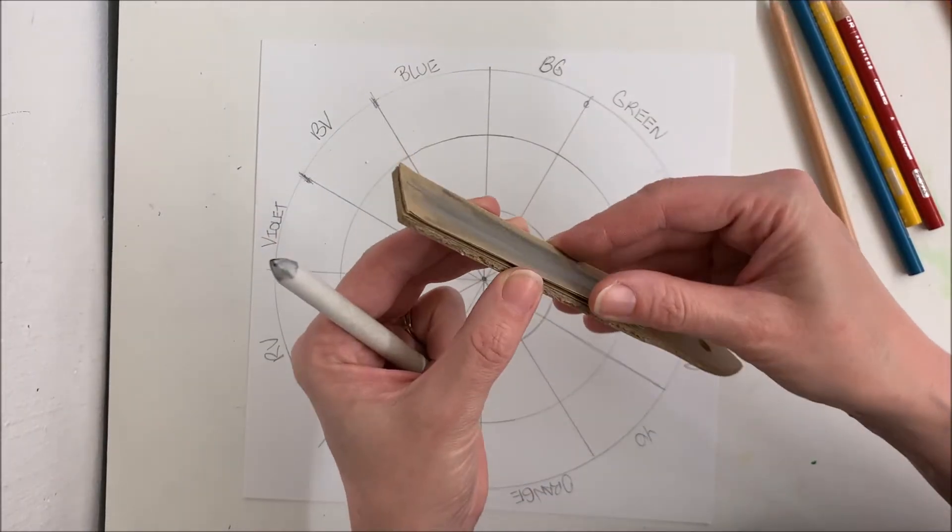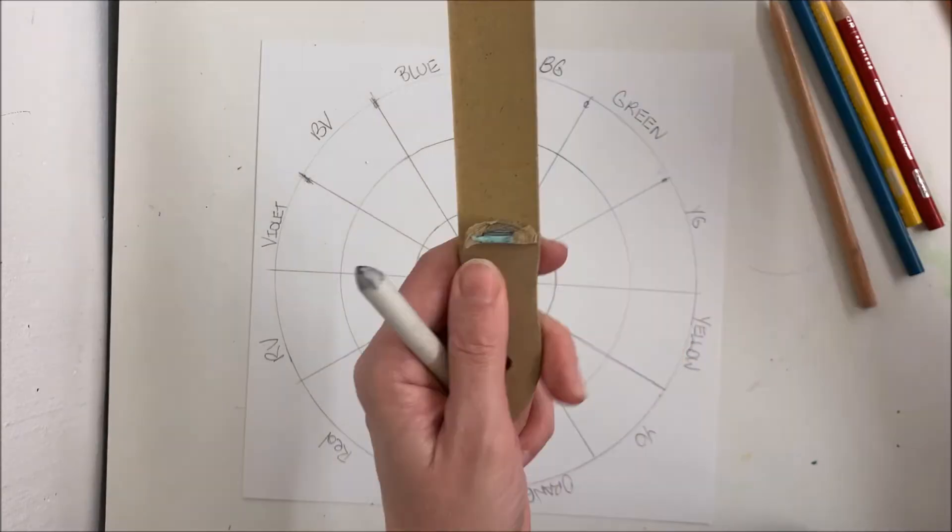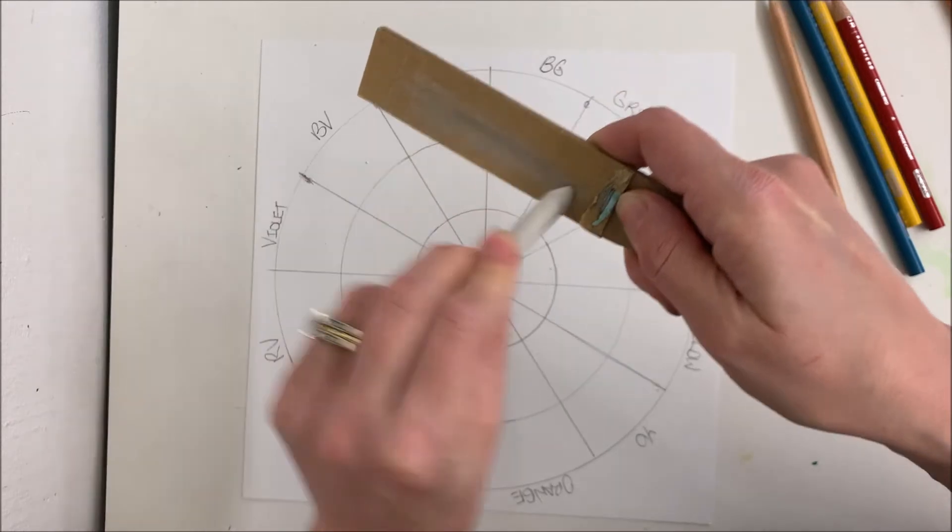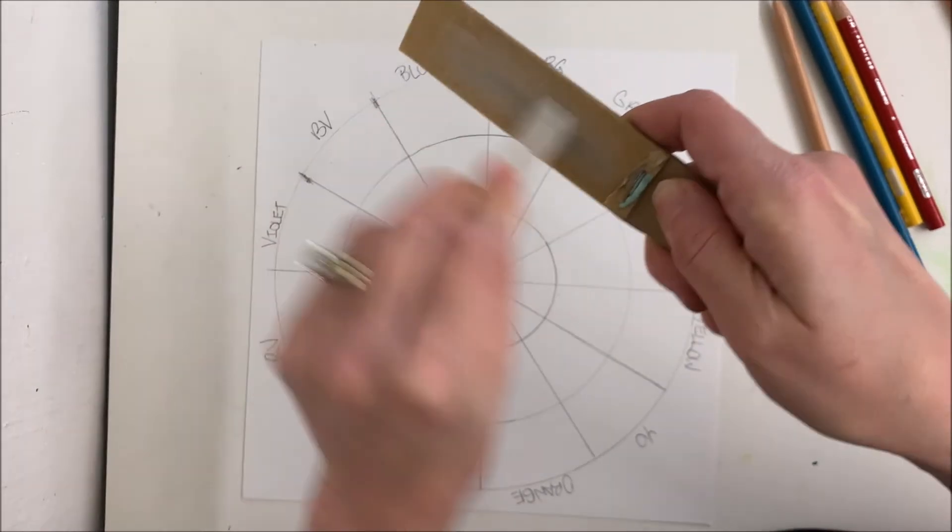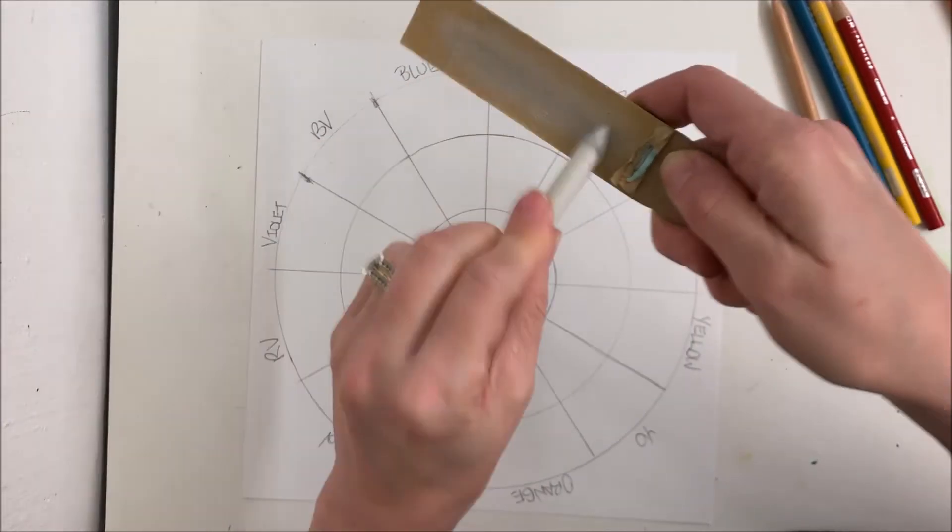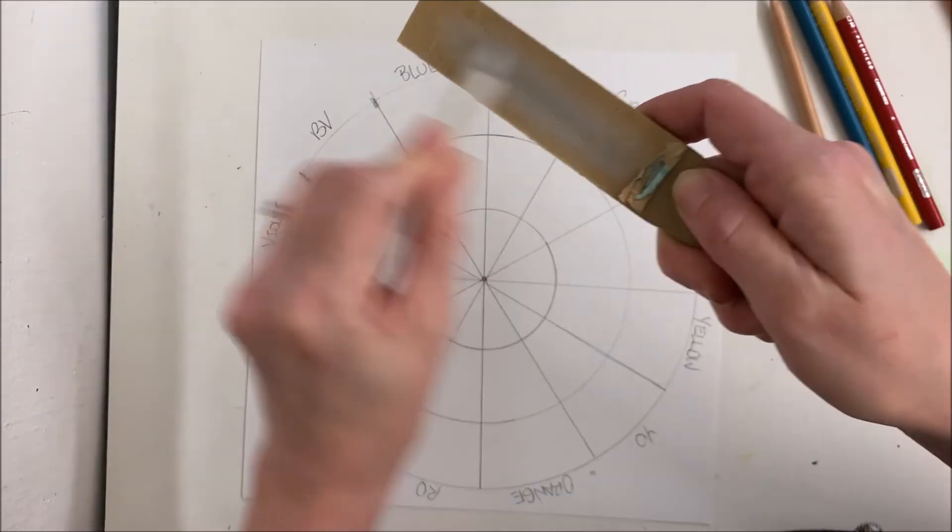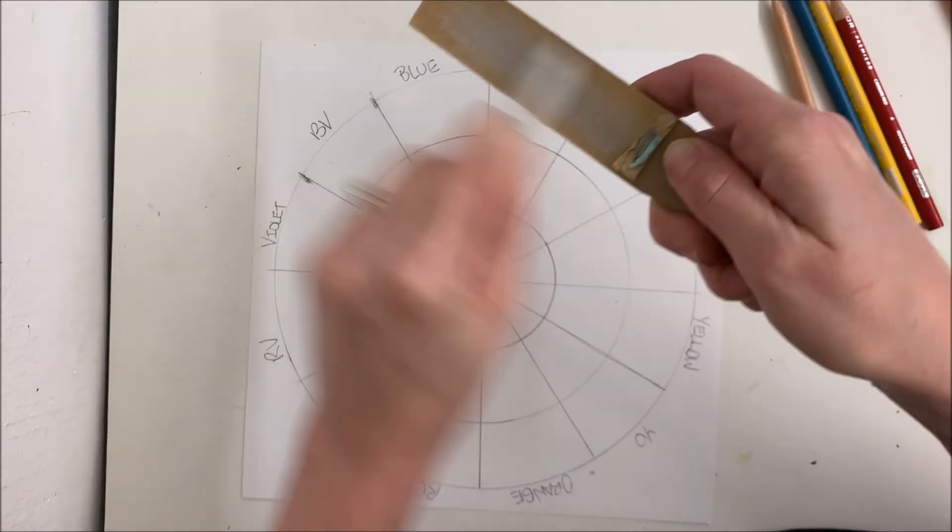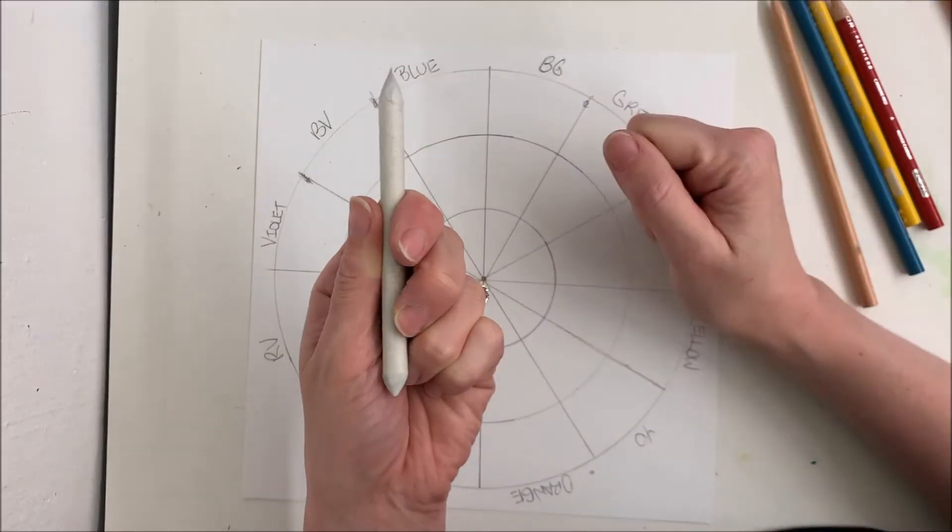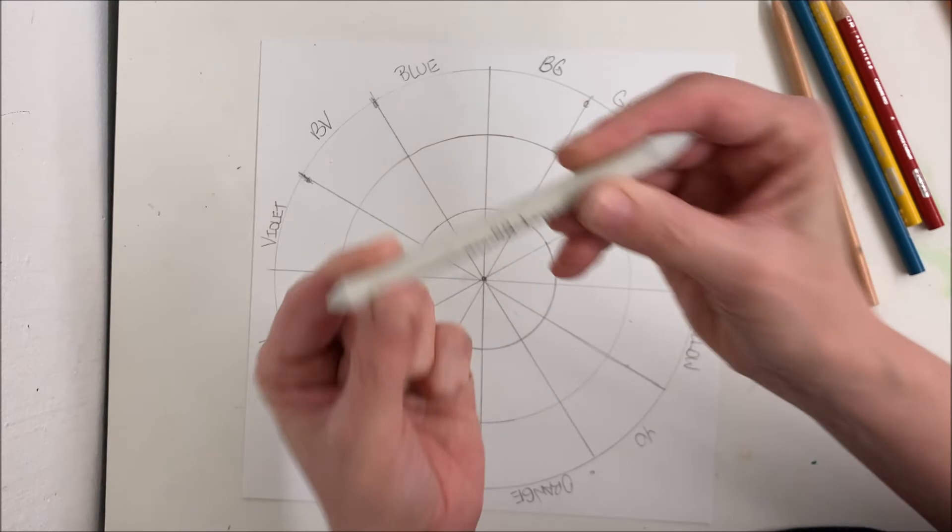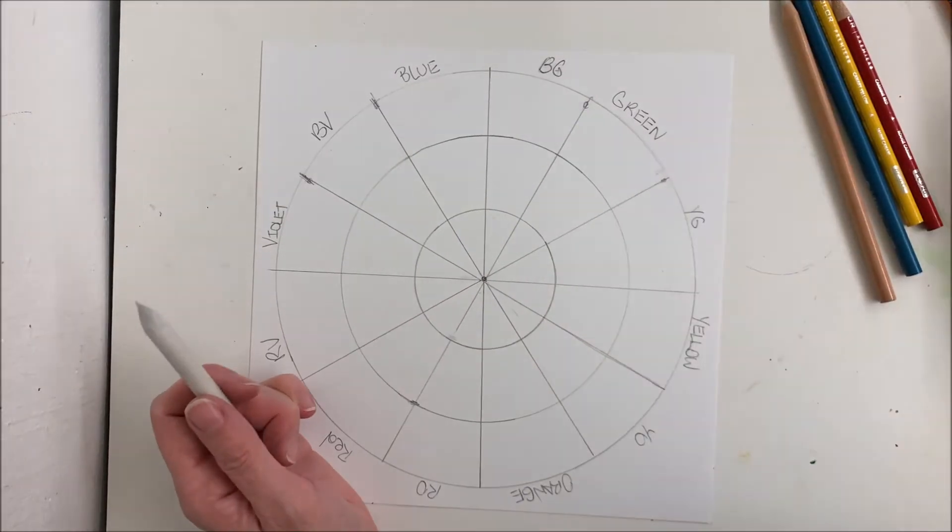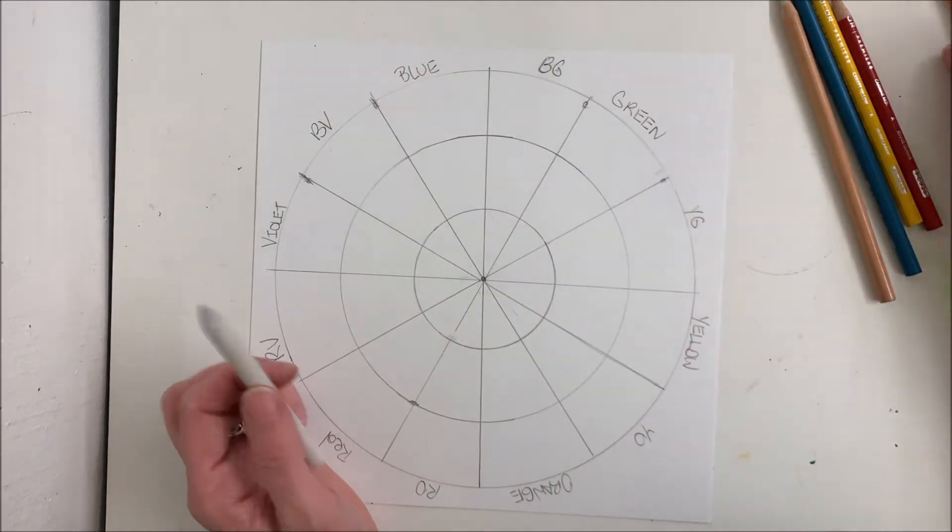So it's very important to keep your blending stump clean between uses. So earlier I was using charcoal, so I'm just rubbing my blending stump on my sandpaper paddle, blowing off the excess. If your blending stump gets too dull, you can always use an exacto knife to sharpen it. Do not put this into a pencil sharpener. It will tear it apart, especially an electric pencil sharpener. Don't do that. So sandpaper and an exacto knife are the way to go.